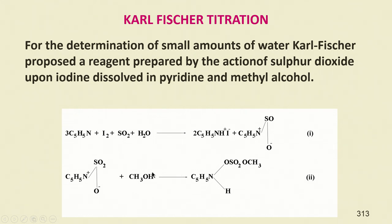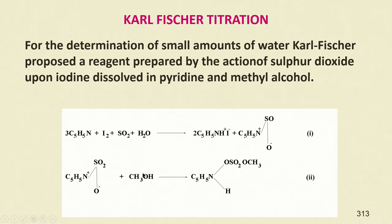The complex C₅H₅N·SO₂⁻ reacts with methanol to give C₅H₅N·OSO₂OCH₃. The hydrogen comes from water and OCH₃ from methanol, so SO₂ becomes OSO₂OCH₃, and OCH₃ is added to the nitrogen in the pyridine group, giving a compound like C₅H₅NH·OSO₂OCH₃.